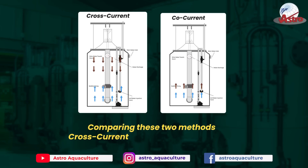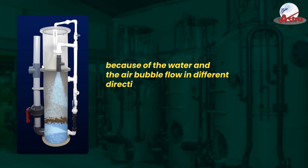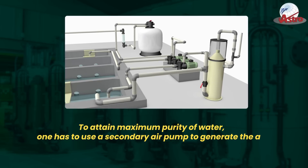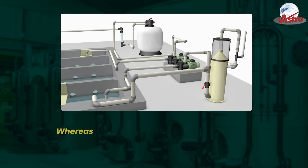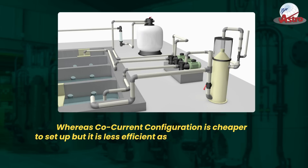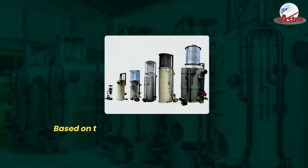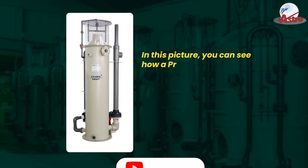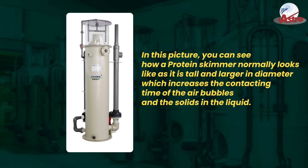Comparing the two methods, cross-current configuration is the most efficient because the water and air bubbles flow in different directions. To attain maximum purity, one has to use a secondary air pump to generate air bubbles inside the skimmer. Co-current configuration is cheaper to set up but less efficient, as air bubbles are generated along with the water using a pump. Based on the requirement, one has to decide the type of protein skimmer to use. In this picture, you can see how a protein skimmer normally looks — tall and larger in diameter, which increases the contact time of the air bubbles and the solids in the liquid.